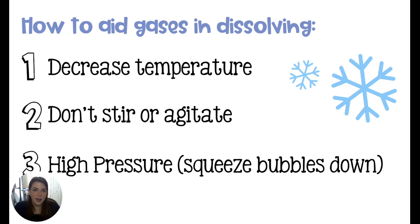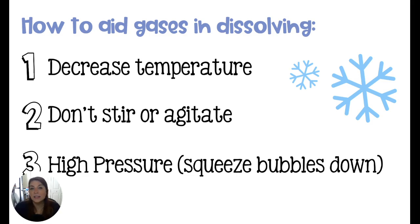That is all for the factors that affect solubility. Solubility charts are coming up next — they can be difficult to read, but it's important to know that temperature is going to be the greatest indicator of the amount of substance you can dissolve. Whether that substance is solid or gas, it's going to come down to temperature. If you have any questions, please leave them in the comment section below.